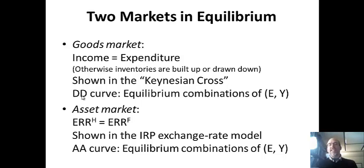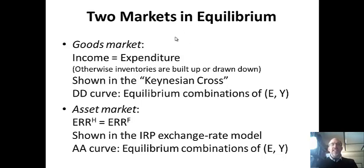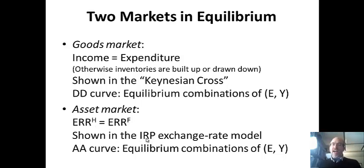The letters DD come from the D in goods — back in the day they would have a line with a D on one end and a D on the other, kind of like supply and demand. The asset market — AA, where A stands for asset — has expected rate of return at home equal to expected rate of return in the foreign country. This is derived from the interest rate parity exchange rate model. The idea is that expected rates of return must be equal; otherwise, capital will flow into the country with a higher rate of return and out of the one with a lower rate of return, and then the curves adjust to restore equilibrium.